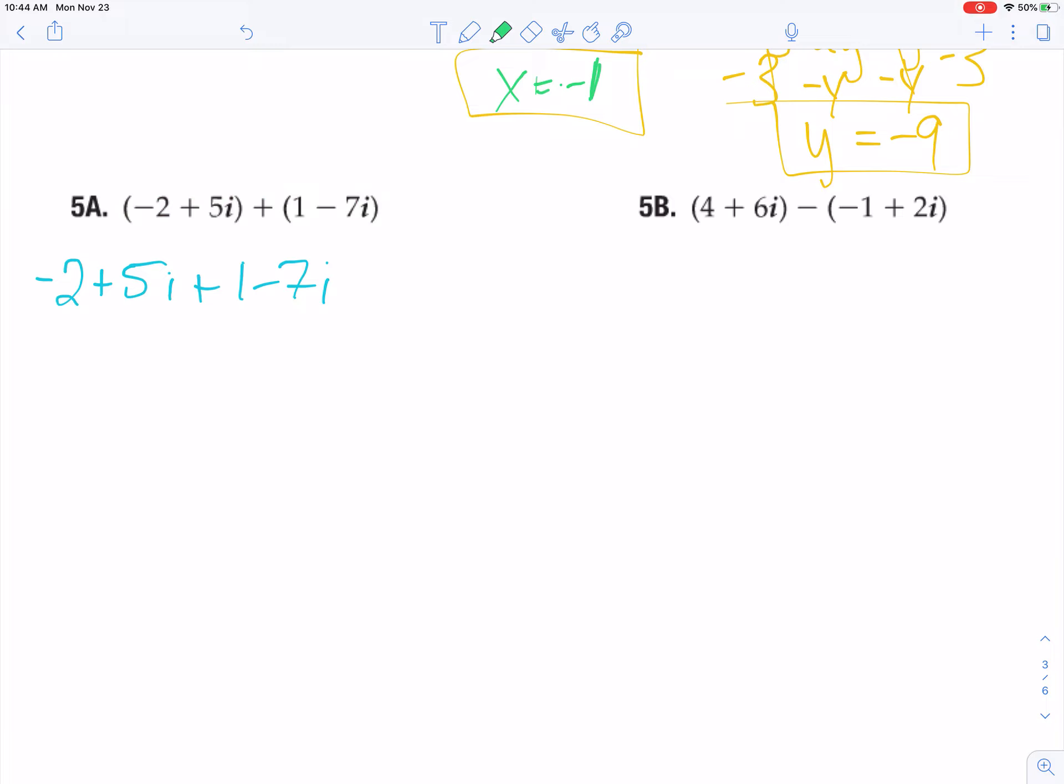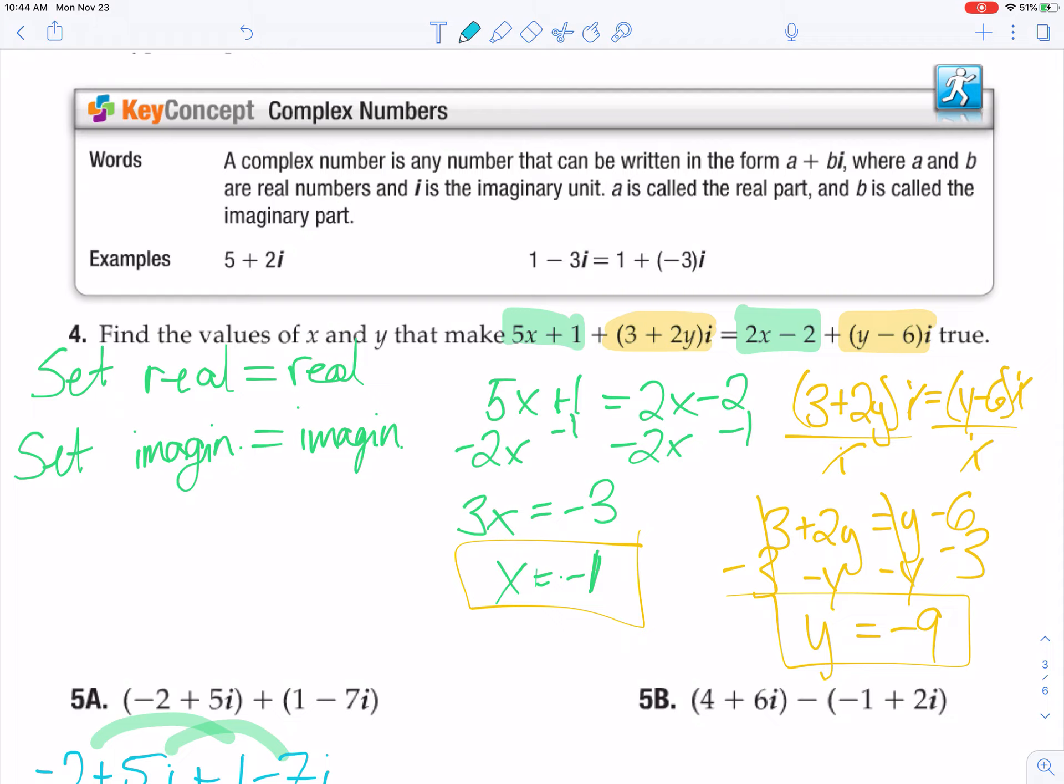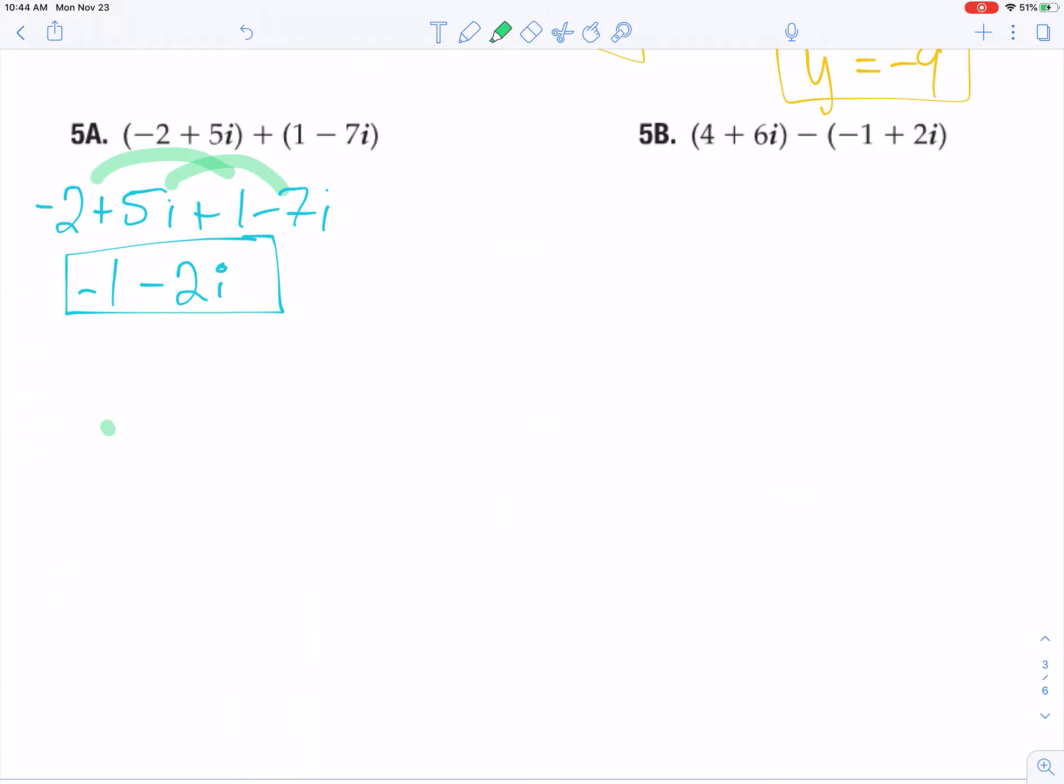And now add the thing, add like terms. That's all you're doing is adding like terms. So negative 2 plus 1 is negative 1. And 5i minus 7i is negative 2i. Notice again with complex numbers, I write that in the form a plus bi.